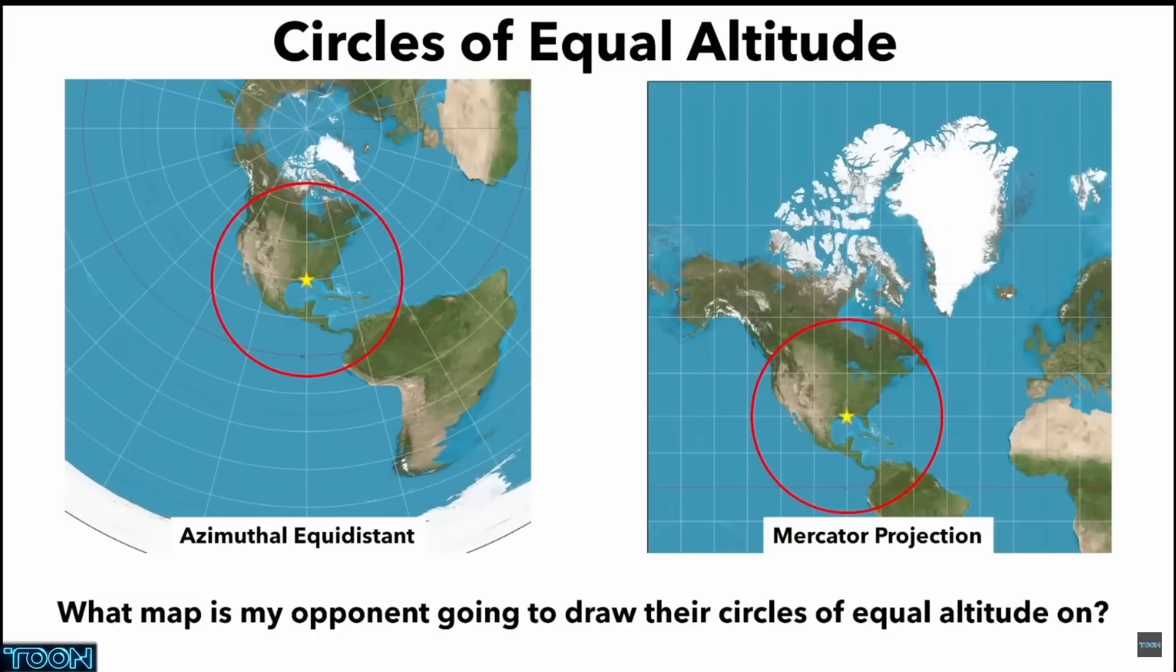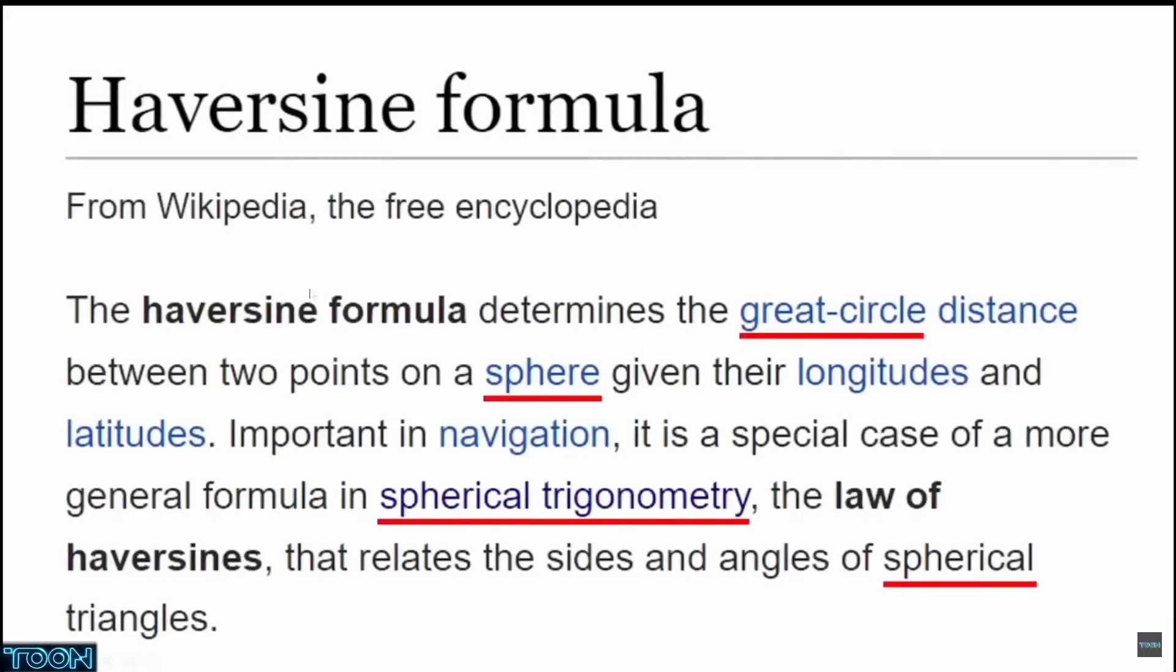And the observer could be at any point on that circle. So in this example on screen, let's say the GP of the star is over Louisiana, we need to find all the points on the surface that are, for example, 1000 nautical miles away from the GP. The question is, what formula am I going to use? The Haversine formula.